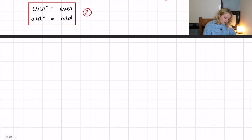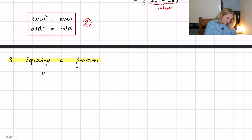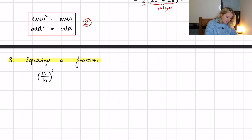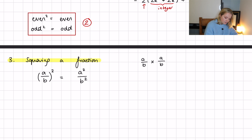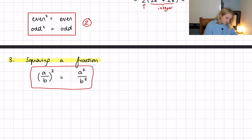Condition 3 is squaring a fraction. All it says is that (a/b)² = a²/b², because (a/b) × (a/b) multiplies the numerators to give a² and the denominators to give b².